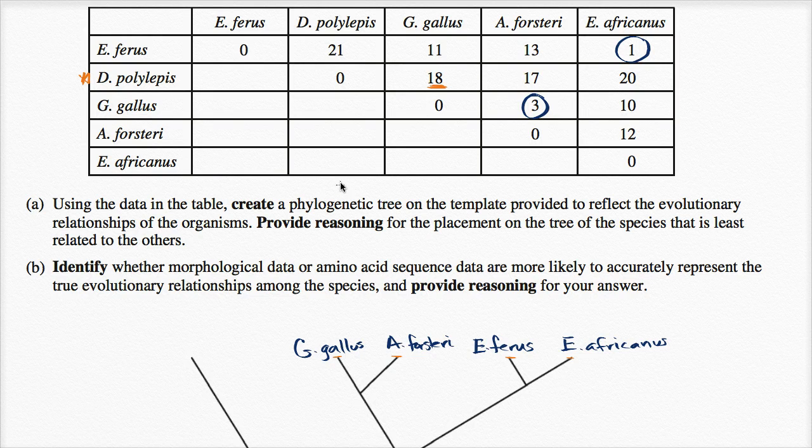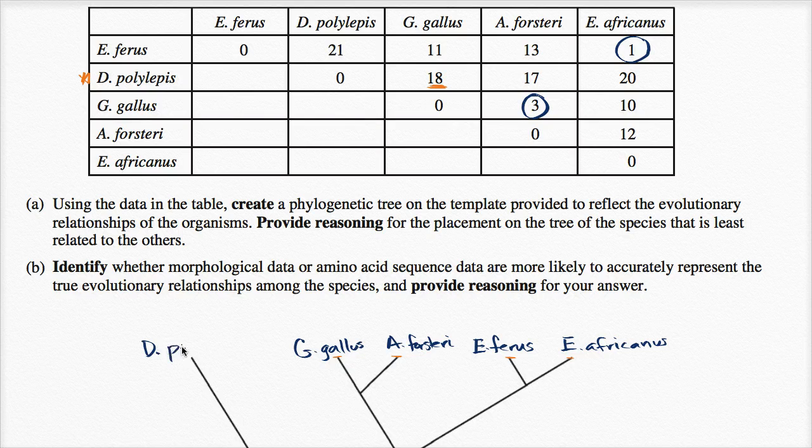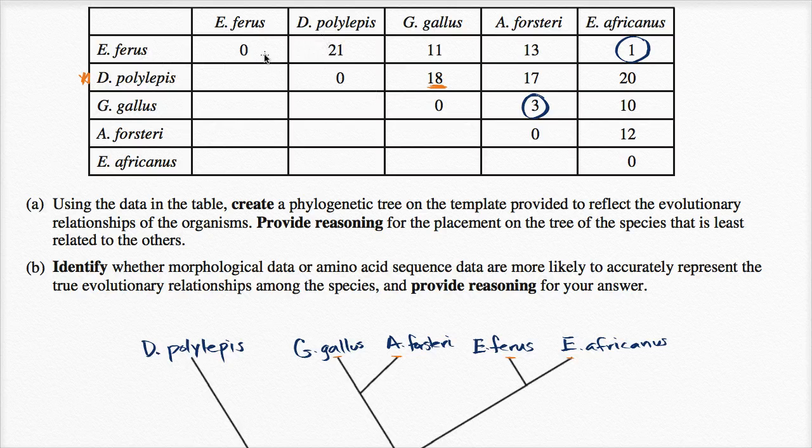And who have we not dealt with yet? Well, we haven't dealt with D. polylepis yet. We've dealt with the other four, so I'll put that here. D. polylepis, and you can see, when you compare D. polylepis to any of the other ones, you see a pretty big difference. D. polylepis to E. ferrous, it's a 21 difference.